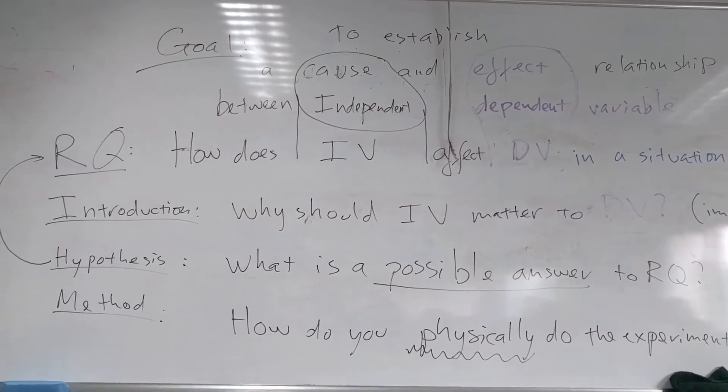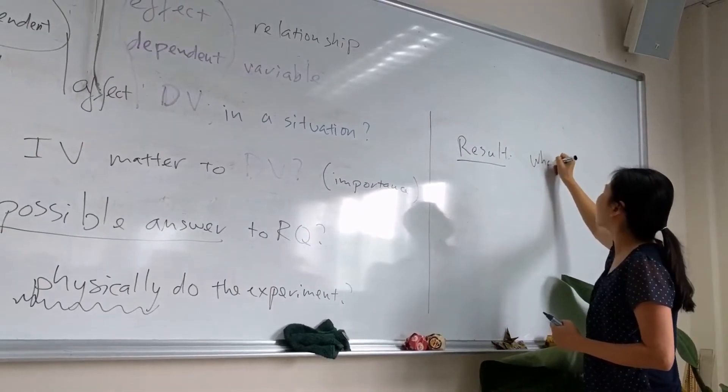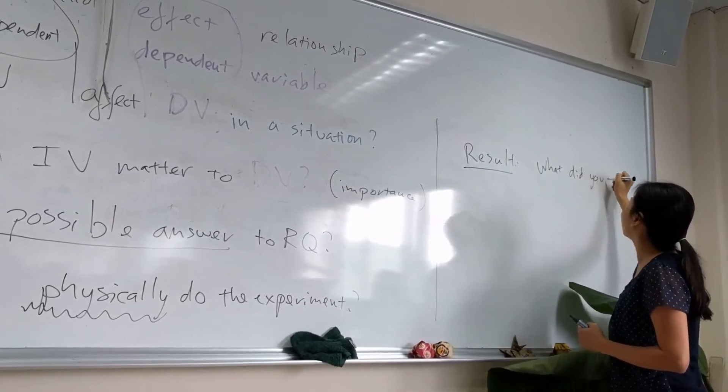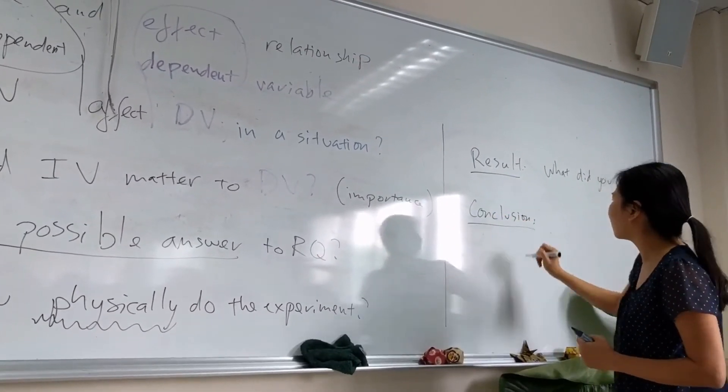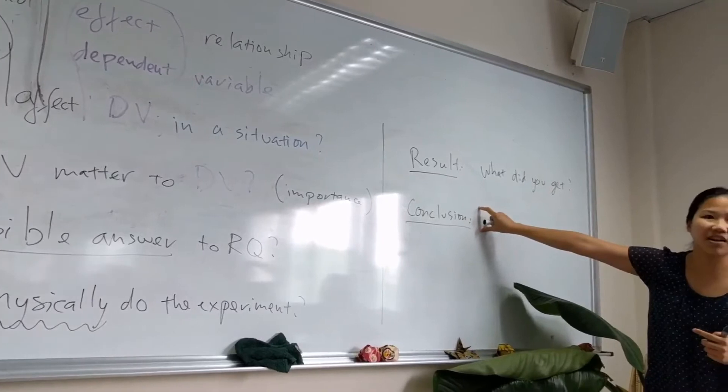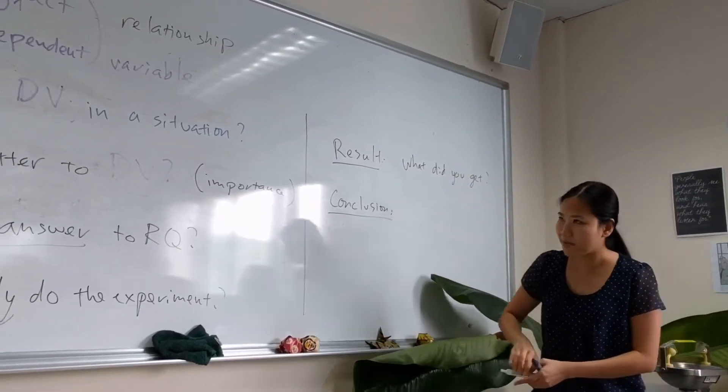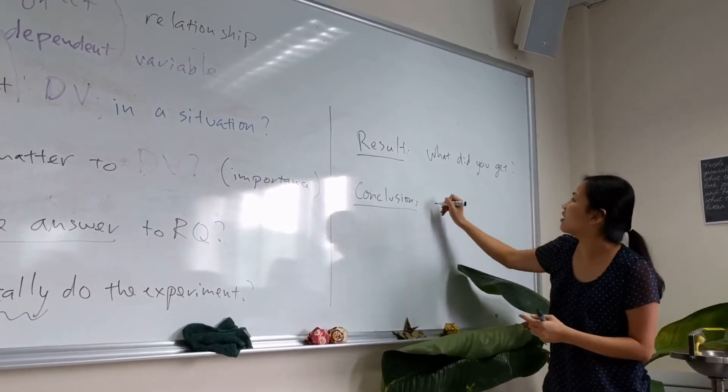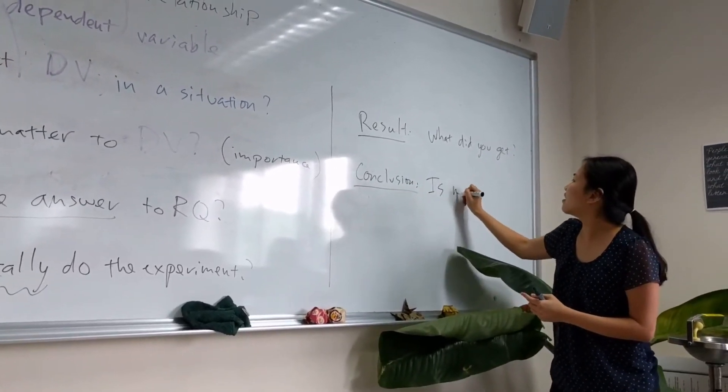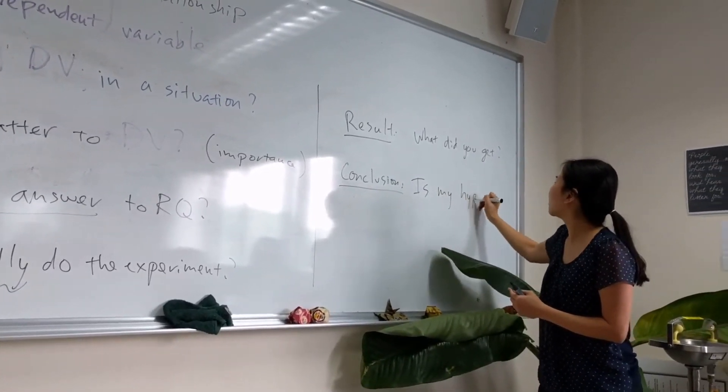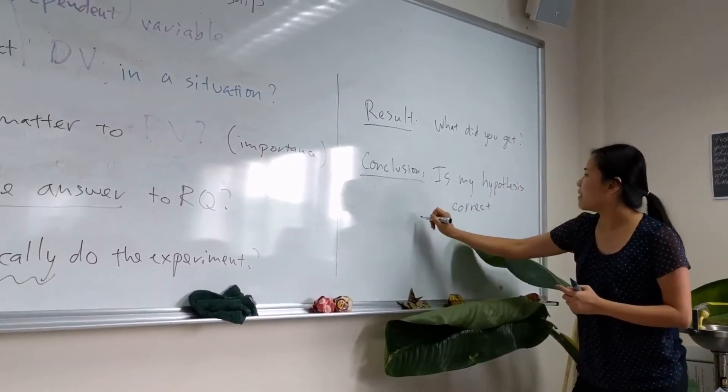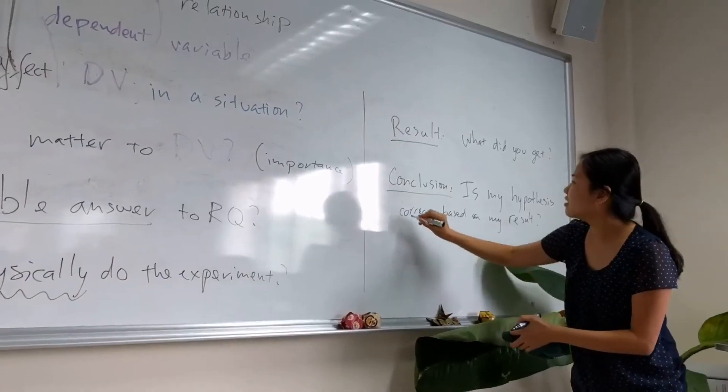The result, conclusion and evaluation. The result is pretty much just whatever. What did you get? Now conclusion is a thing that a lot of people get messed about. The point of the conclusion is to say is my hypothesis correct based on your data.